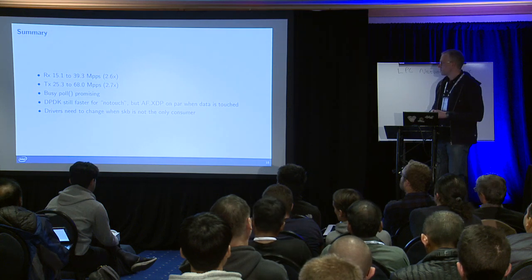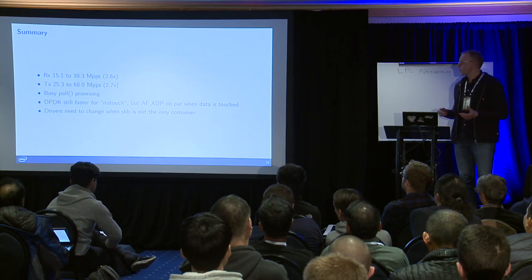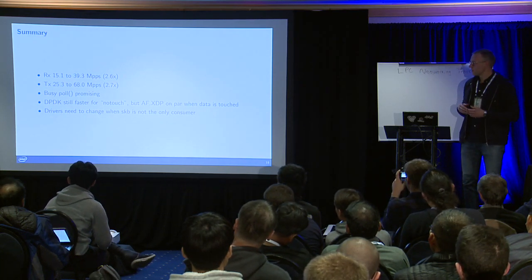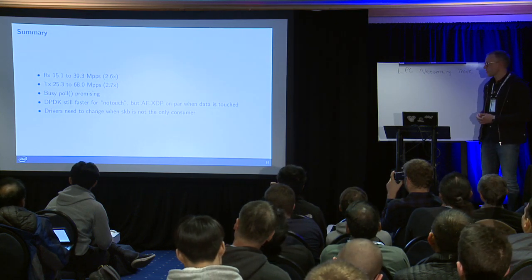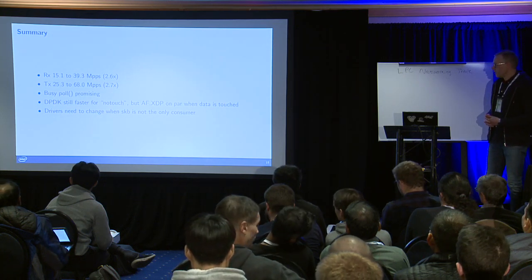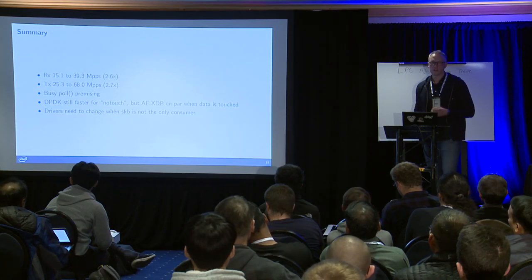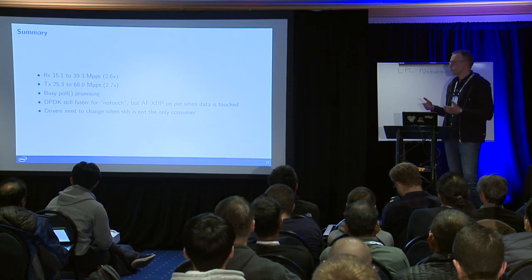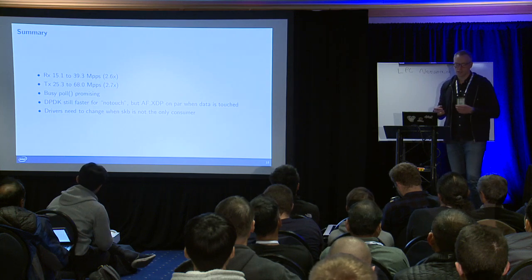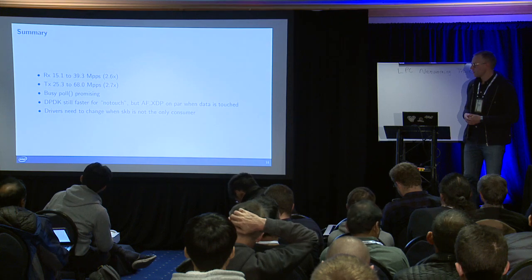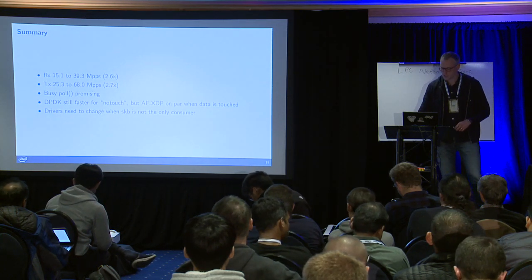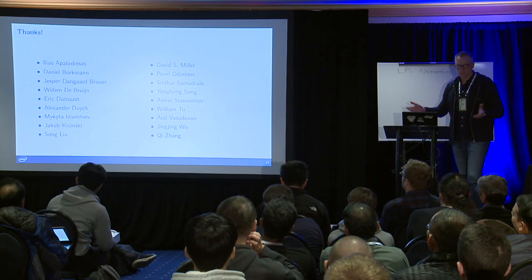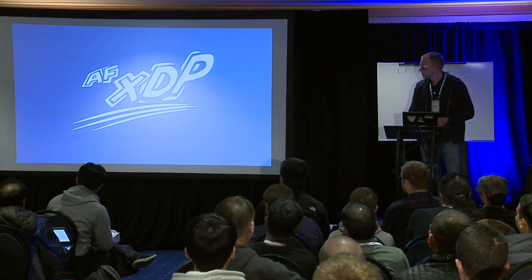Summary: roughly 2.5x performance improvement for both RX and TX. Busy polling seems to be a good approach. With meltdown patches, each system call costs roughly 250 cycles instead of 50. DPDK is still faster, but AF-XDP is on par for a real benchmark. For Intel drivers, we need to think about going forward when XDP is this new fast path within the kernel — we need to deal with more than just SKB. And we have a new logo!